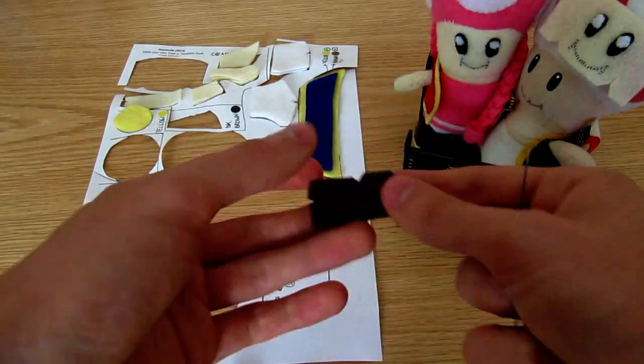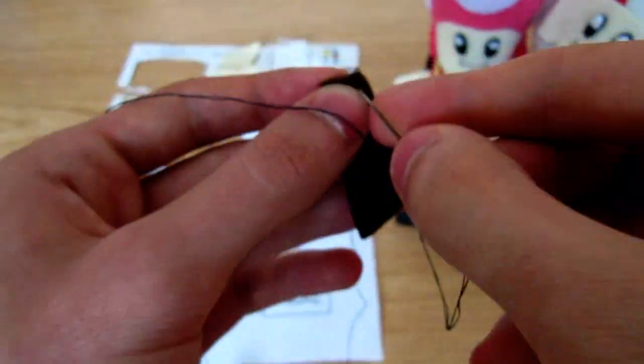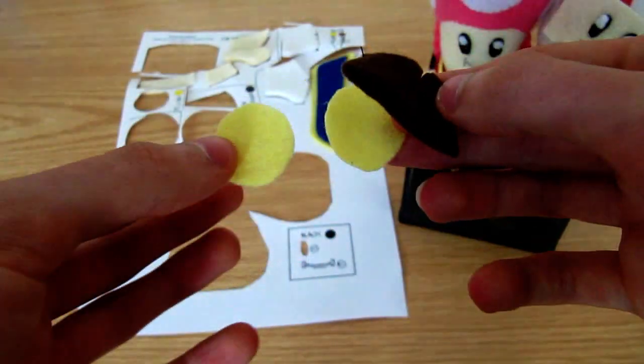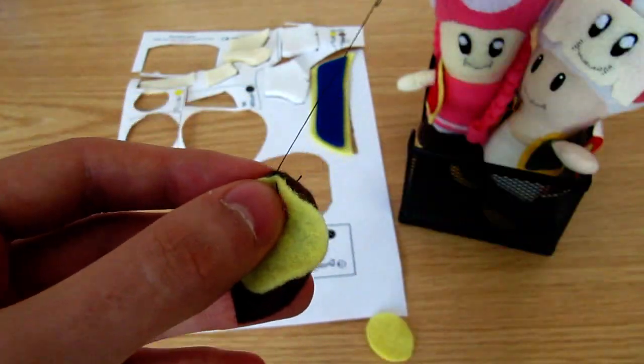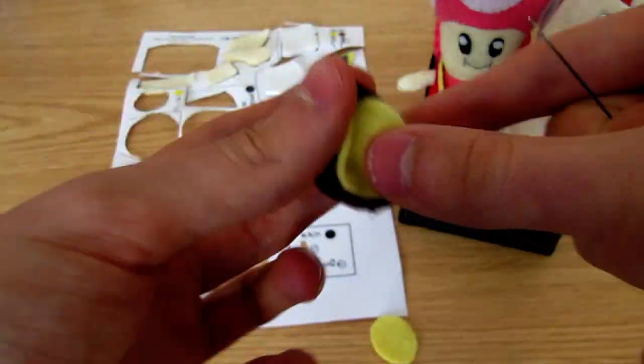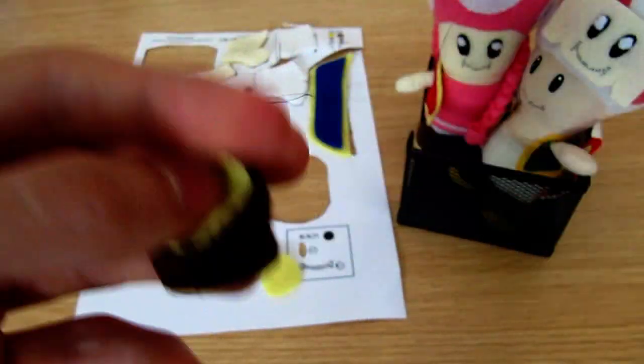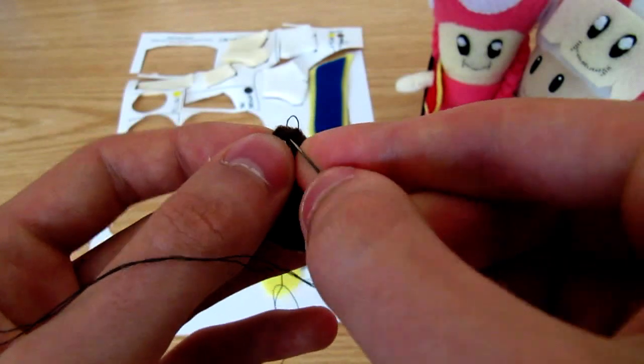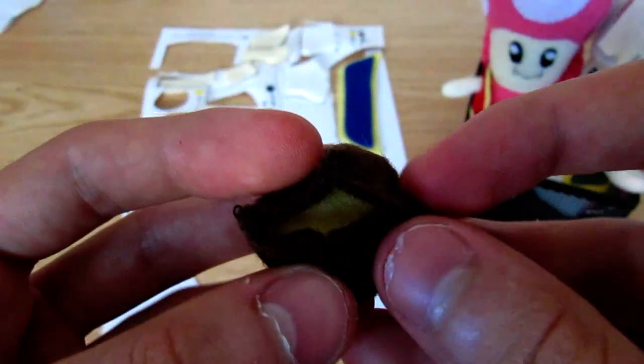Now over to the feet. Pair up the feet and sew along the front and back of each pair with dark thread. Then attach the sole at the front and back, before going round the whole way. Also sew up the darts. Then turn each foot the right way out.